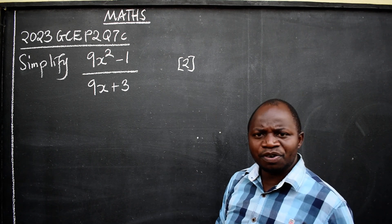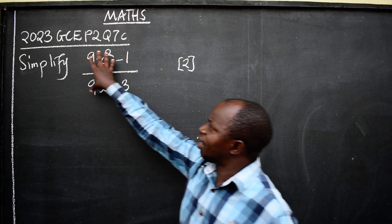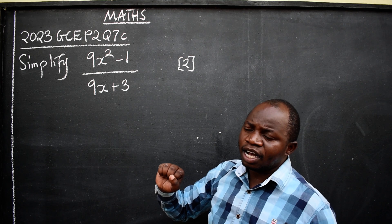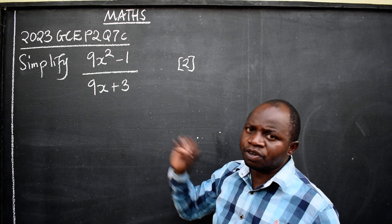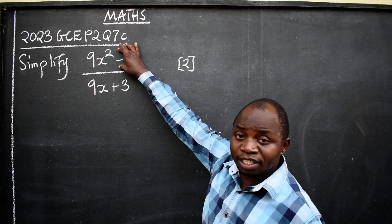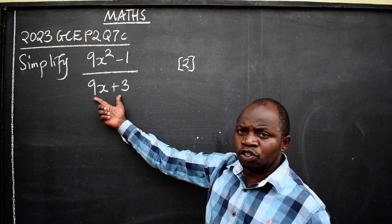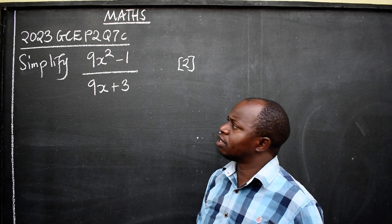Well, for me to simplify this expression, I should think of factorization. Meaning, the numerator must be factorized and also the denominator should be factorized.